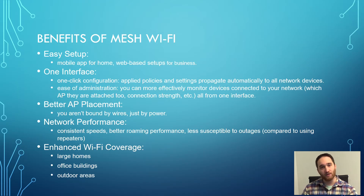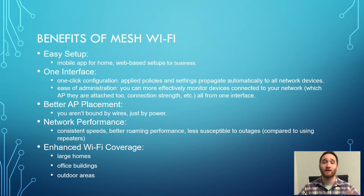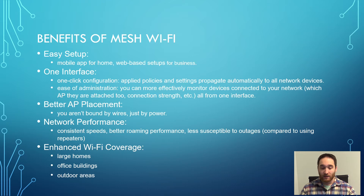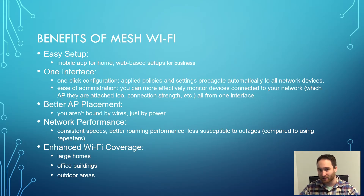You also get ease of administration — you can more effectively monitor device performance, what kind of data is being sent back and forth, and which access point devices are connected to. You get better AP placement: if you're not bound by wires, you can put access points in more creative places and expand Wi-Fi coverage further. Worth keeping in mind: you still have to power the access points even if you don't run Ethernet. You also get better network performance — more consistent speeds, better roaming, and less susceptibility to outages because one AP going down doesn't take down the whole system.